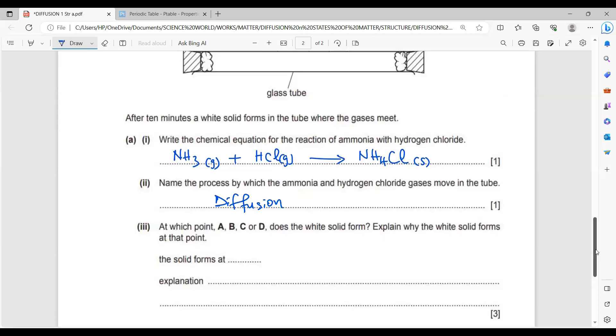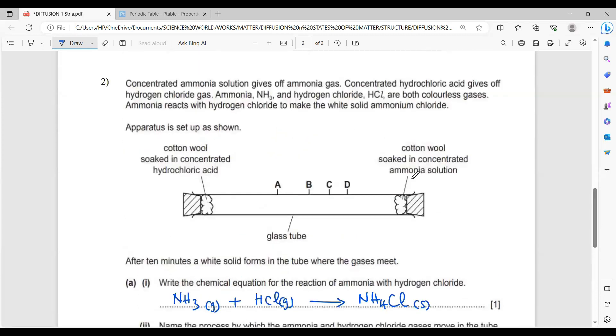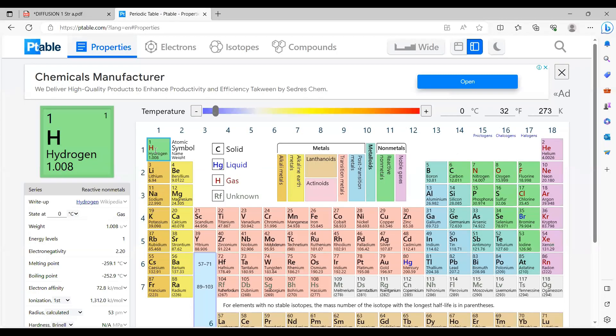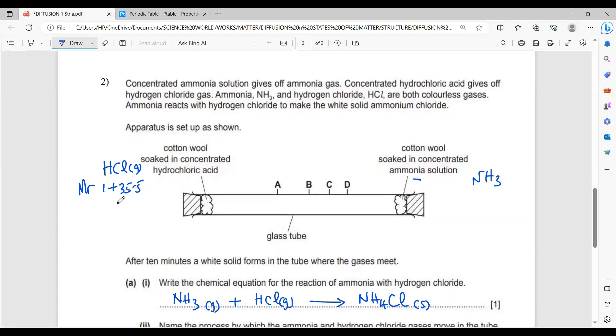At which point A, B, C, or D does the white solid form? At which point do you think the white solid is going to form? So if we have ammonia here and we have hydrochloric acid, you need to determine which of them will move faster. So this is your hydrogen chloride gas and your ammonia. You have to actually get their molecular masses. What is the molecular mass of hydrogen chloride?